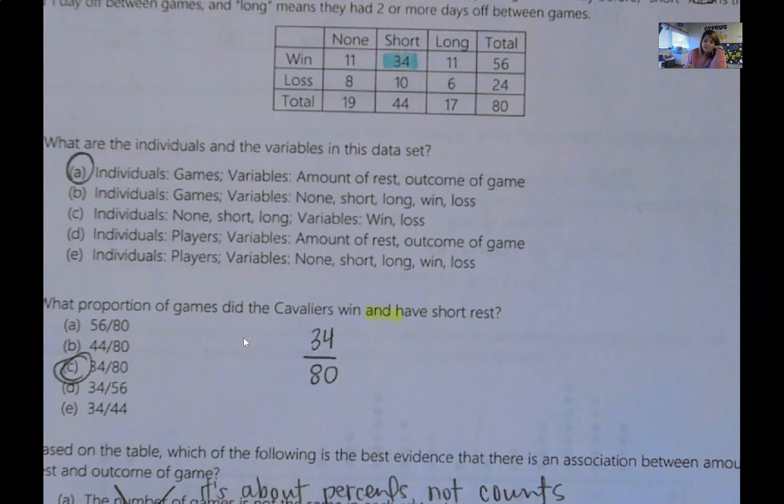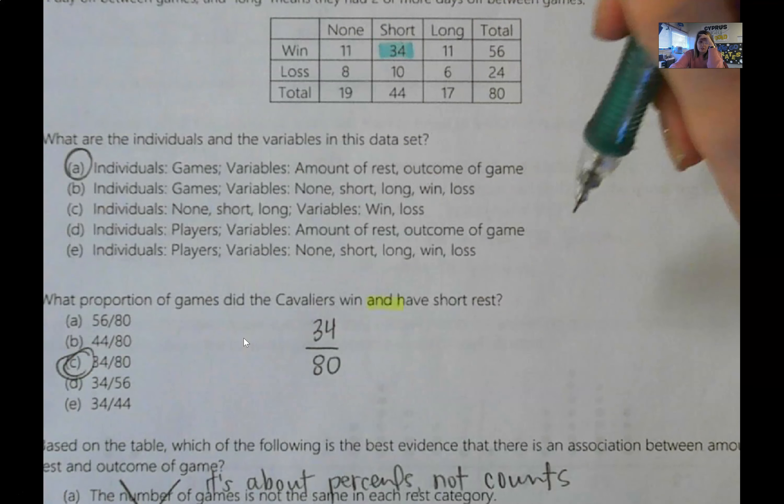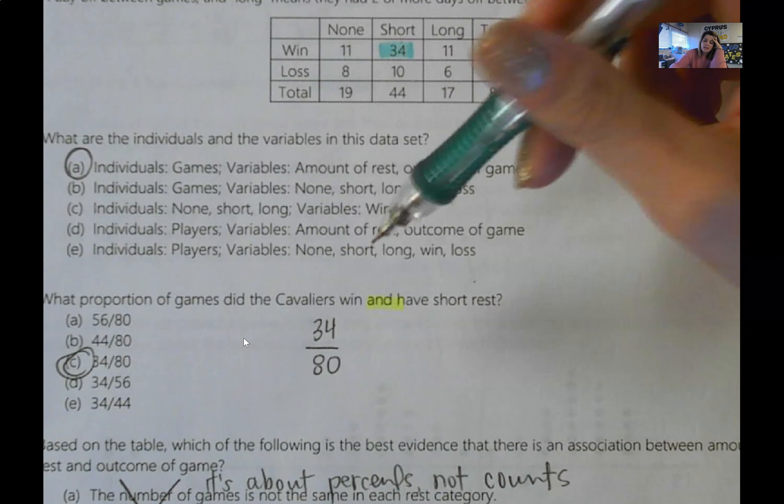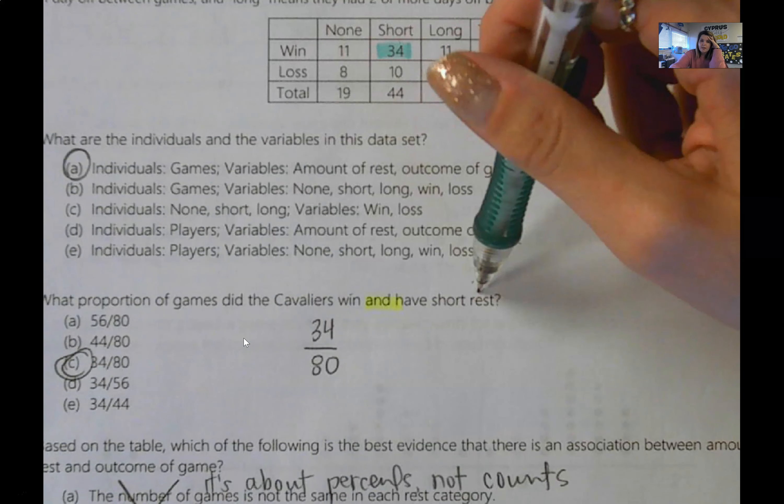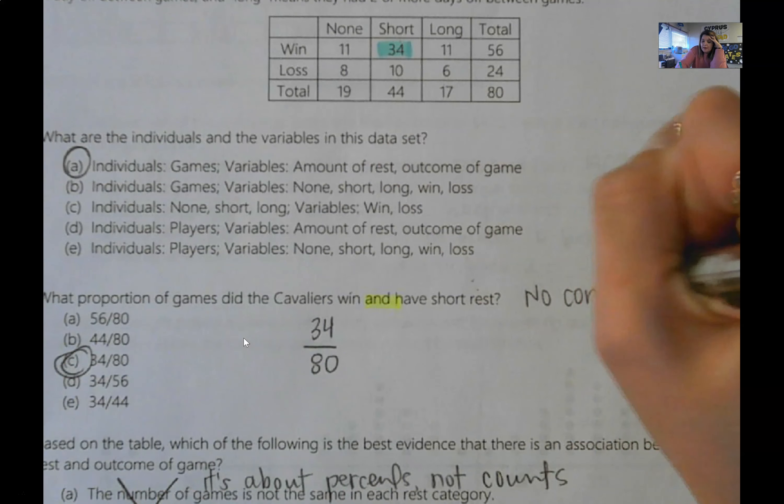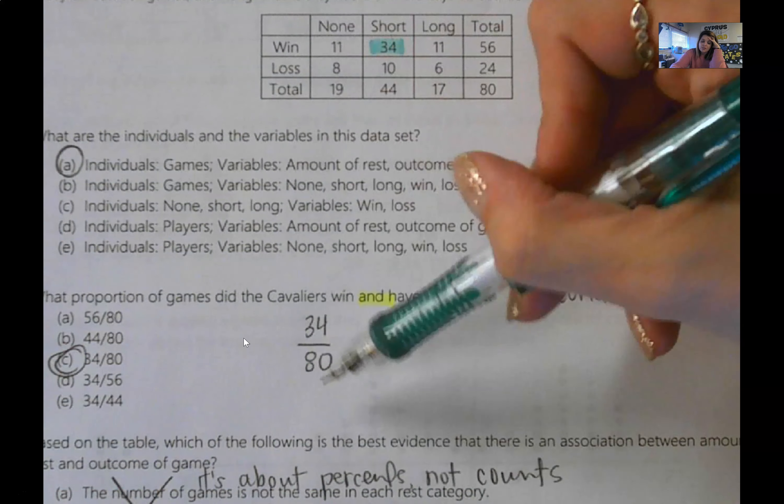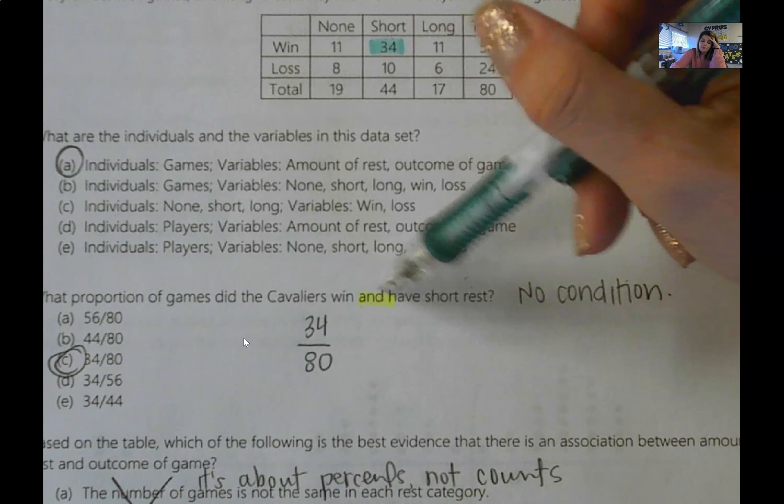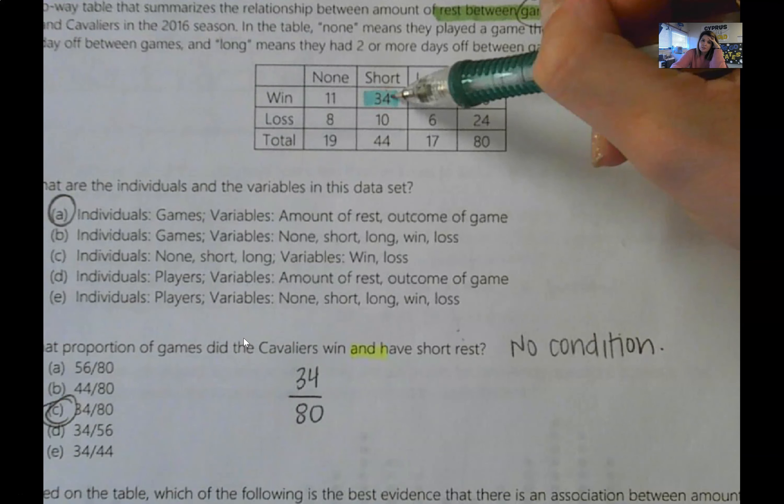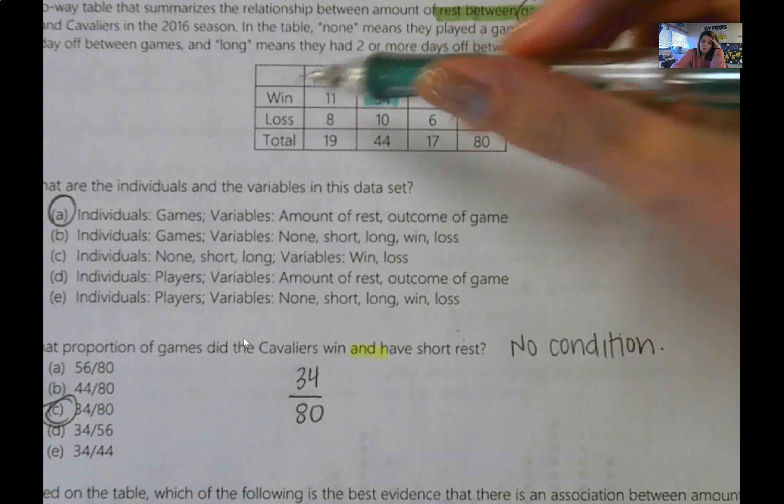Number six, what proportion did the Cavaliers win and have a short rest? So this is not giving you a condition. This is not saying of the games they won, how many did you have a short rest before? And it's not saying of the times that you had a short rest, how many of those games did you win? There is no condition here. And if there's no condition, that means that the bottom of your proportion is the table total. So the bottom is your table total because there's no condition. The word and is very important. So it's win and have a short rest, so it's going to be this box here. These were the win and the short rest line up. So 34 out of the 80 games, you won and had a short rest.